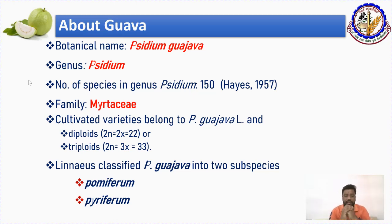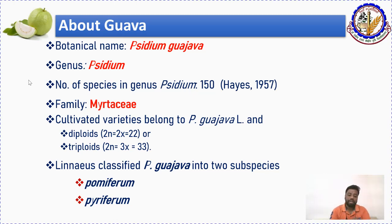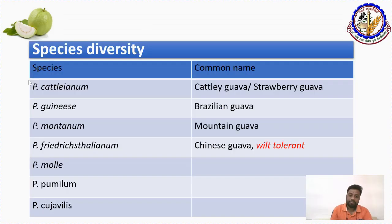All Psidium species belong to family Myrtaceae. Cultivated guava can be diploid or triploid — diploid guava has chromosome number 2n=22 whereas triploid guava has 2n=33. Psidium guajava can be of two types: pomiferum, meaning apple-shaped, or pyriferum, meaning pear-shaped. There are also other species like cattleianum or strawberry guava, guineense or Brazilian guava, montanum or mountain guava, and littorale or Chinese guava.